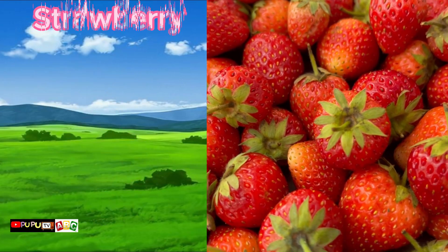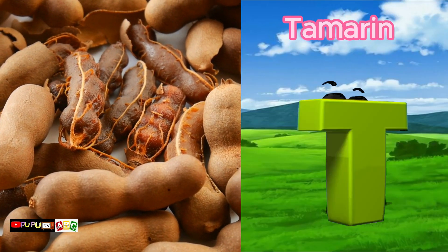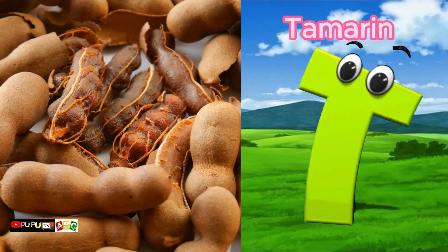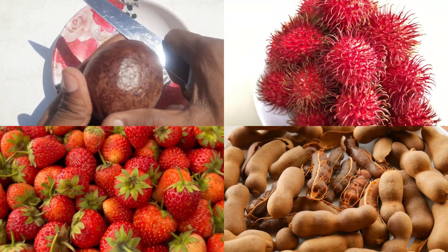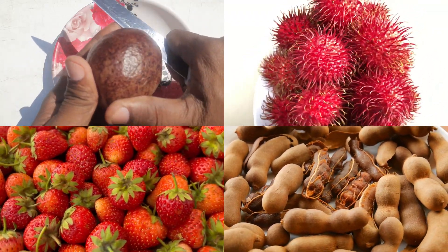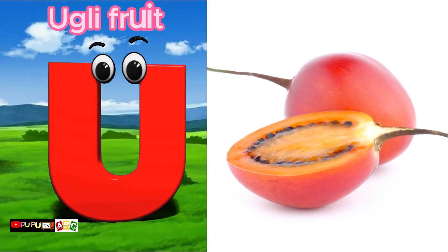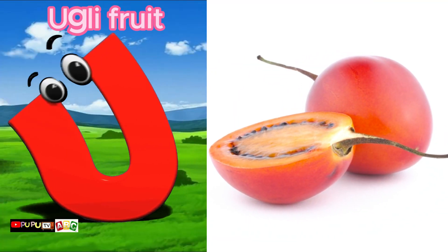T is for Tamarind. Tamarind. U is for Ugly Fruit. Ugly Fruit.